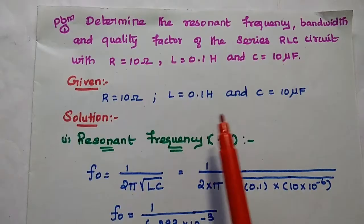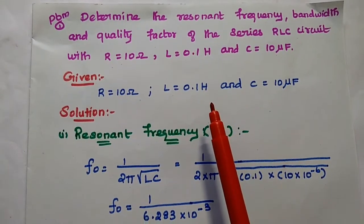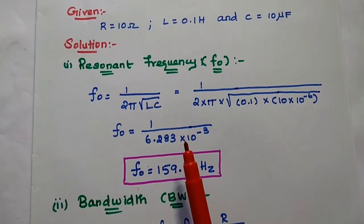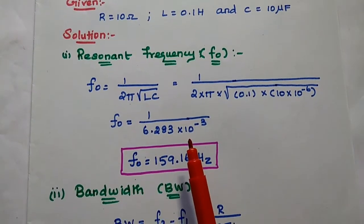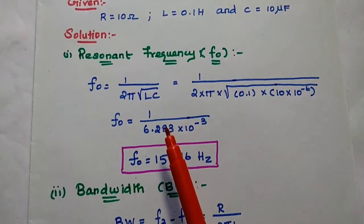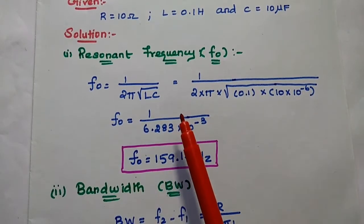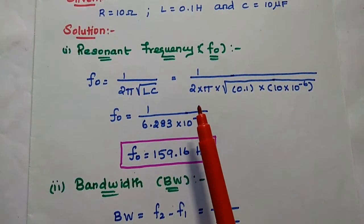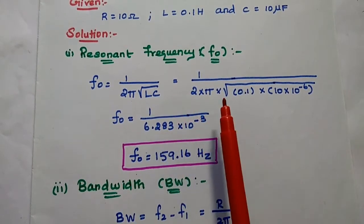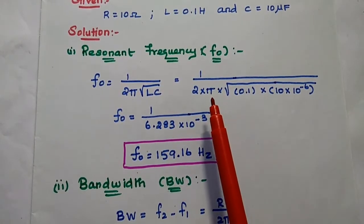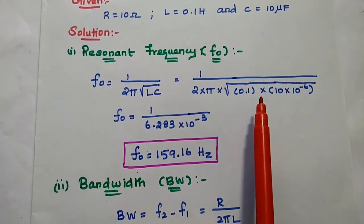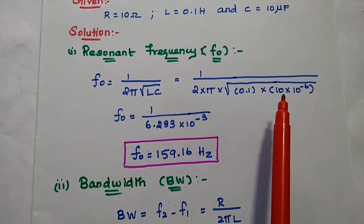First we have to write the given data — R, L and C values are given in the problem. In the solution part, first we are going to find out the resonant frequency F0. The formula is 1 by 2π square root of LC. We substitute the values of L and C: 1 by 2π square root of 0.1 multiplied with 10 microfarad, that is 10 into 10 to the power minus 6.